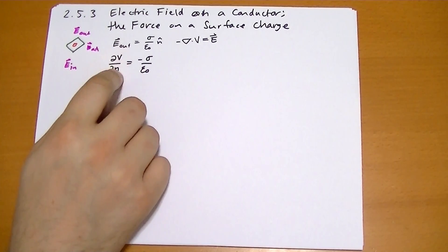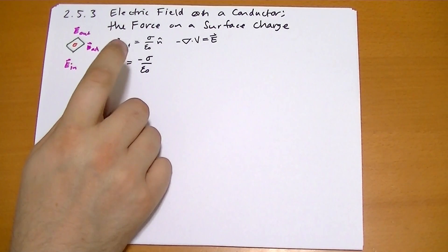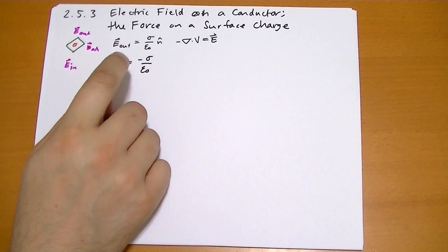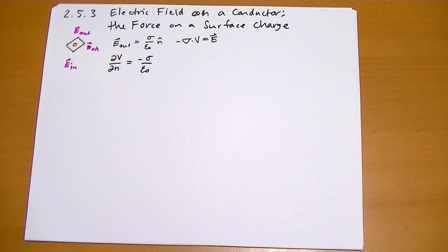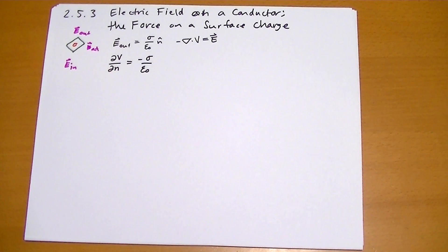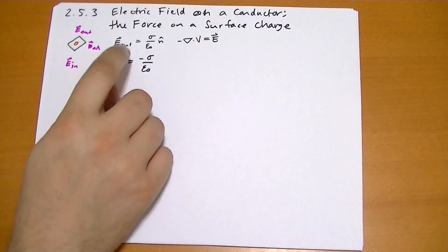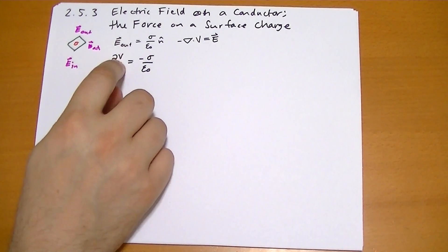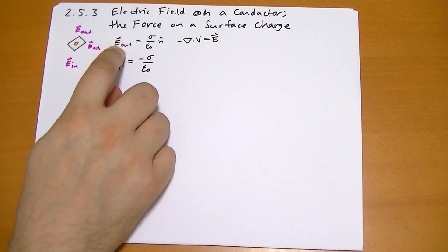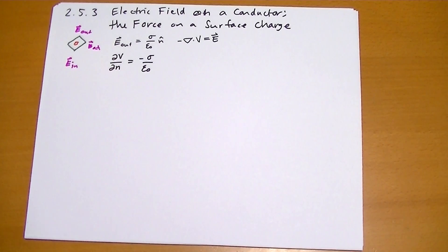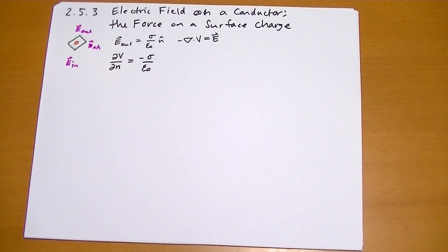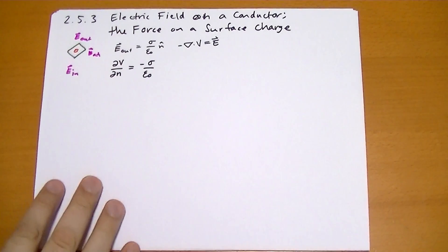So we know how the potential is changing along that surface. If you know the potential at the surface, or the electric field immediately outside the surface, you can easily calculate what the surface charge is at the surface.